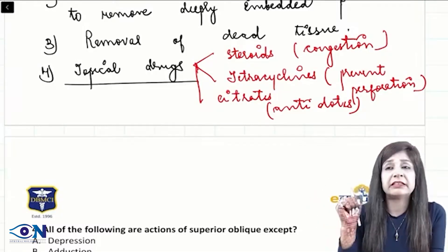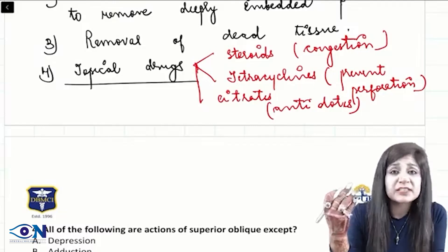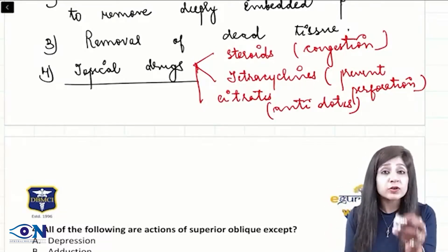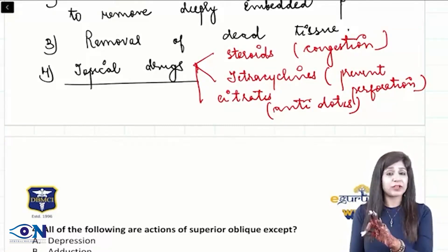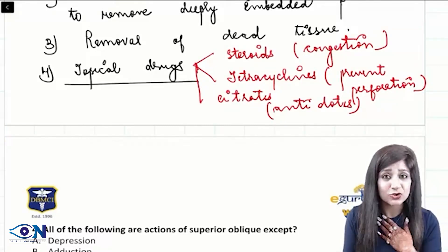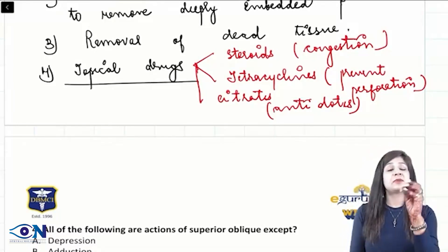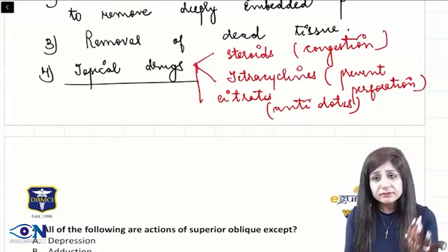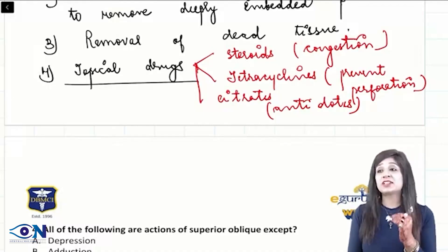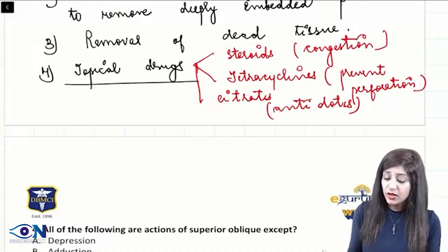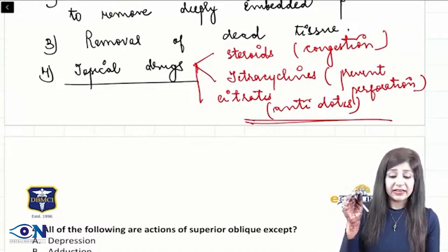Tetracycline or doxycycline, anything can be given. Steroids obviously under the antibiotic cover for a limited time in order to combat the congestion. While I am writing steroids, I am telling you disclaimer continuously that it has to be under guided vigilance. The citrate is anti-neutrophilic, anti-proteolytic, anti-collagenolytic - a definite antidote.